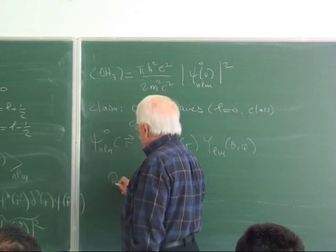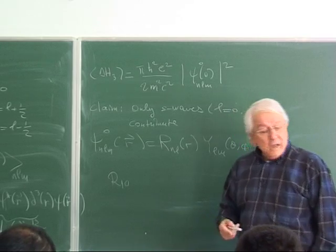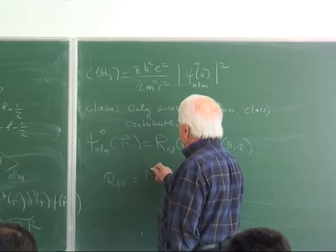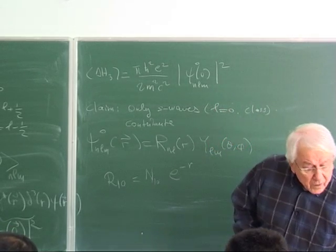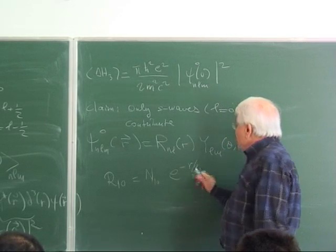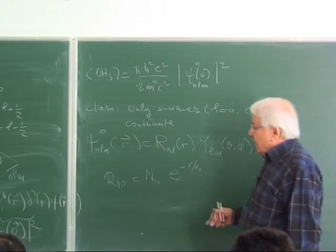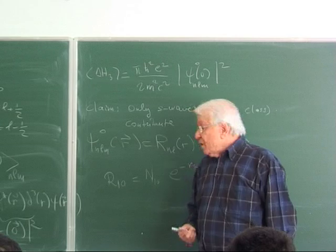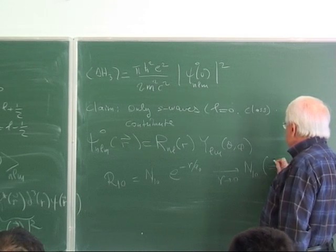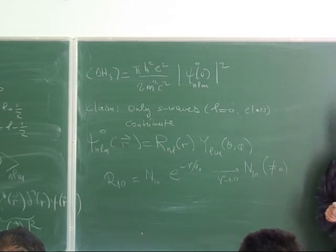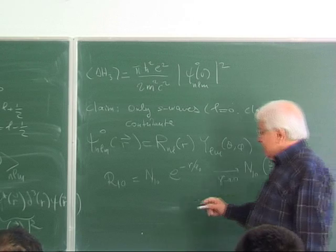For N equals 1, L can only be zero. R_10 behaves as a normalization constant times e^(−r/a0). When r goes to zero, this goes to a nonzero constant — the ground state does not vanish at the origin. For N equals 2, L can be 0 or 1. R_20 is proportional to (1 − r/2a0) e^(−r/2a0), which also approaches a nonzero constant as r → 0.